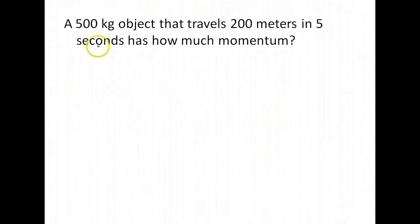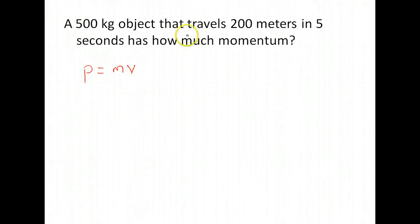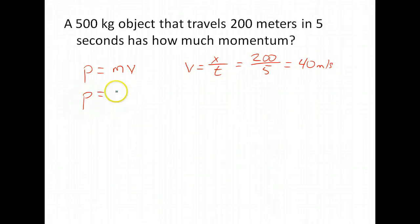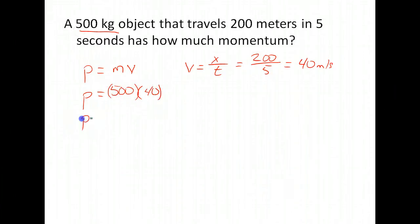We're going to use momentum again, but slightly differently. A 500 kilogram object travels 200 meters in 5 seconds — what is its momentum? We have the mass but not the velocity, so we calculate velocity as displacement divided by time: 200 meters over 5 seconds gives us 40 meters per second. Plugging back in: 500 kilograms times 40 meters per second gives a momentum of 20,000 kilogram meters per second.